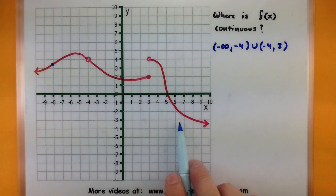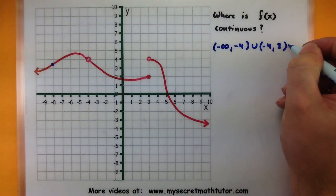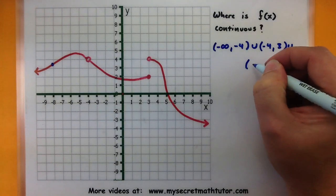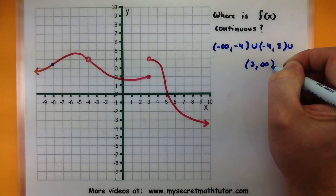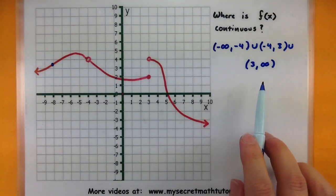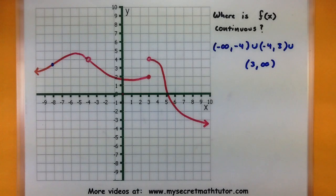Alright but what about after 3? After 3 looks pretty good. Use our little union symbol and put on one more interval so from 3 to infinity. So on these intervals the function is continuous, at these individual places not continuous.